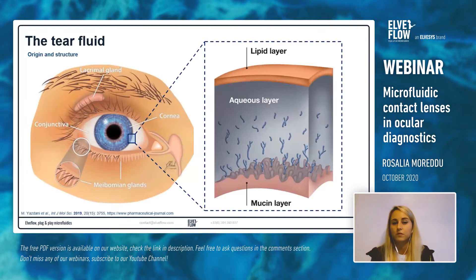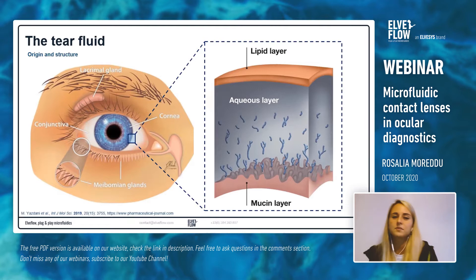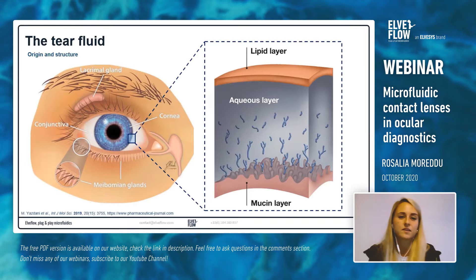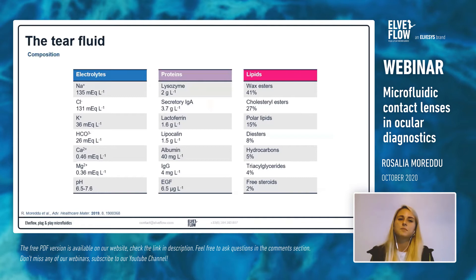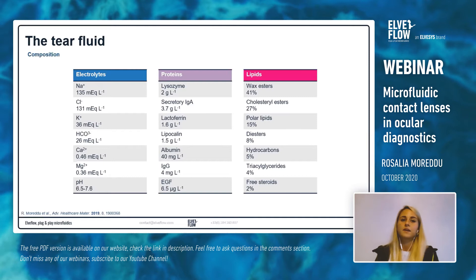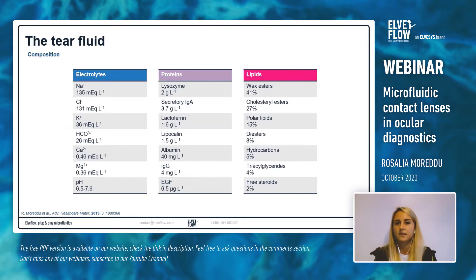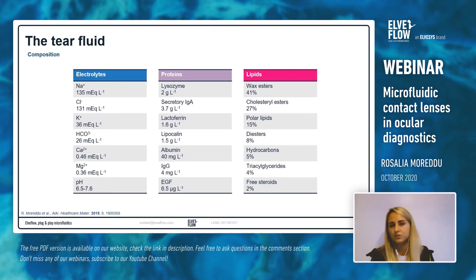Tears are one of the most easily accessible body fluids, covering the surface of our eyes. They are made 98% of water and are secreted by the lacrimal gland and the meibomian glands. They can be divided into three main layers: a lipid layer, an aqueous layer, and the mucin layer, which interfaces the cornea. Tears also contain a bunch of other analytes like electrolytes, proteins, and lipids.